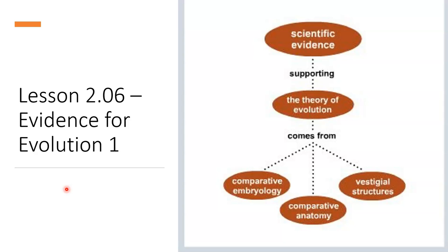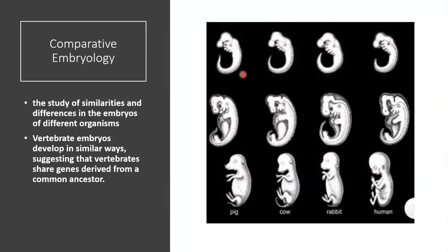Quick tour through lesson 206 — you do have to read it. There is scientific evidence supporting the theory of evolution from three areas: comparative embryology, comparative anatomy, and vestigial structures. Comparative embryology is the study of similarities and differences in the embryos of different organisms. Vertebrate embryos develop in similar ways, suggesting that vertebrates share genes derived from a common ancestor. You can see that at early stages of development, the pig, cow, rabbit, and human all look very similar, and it isn't until later stages of development that they start to differentiate.